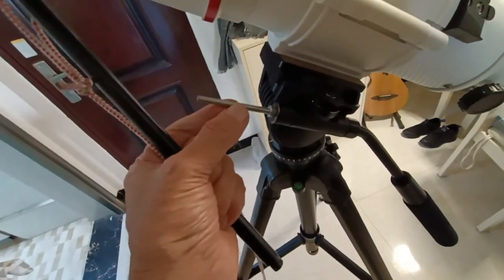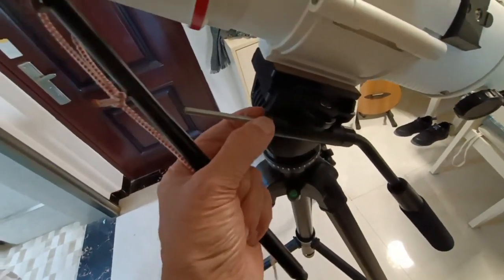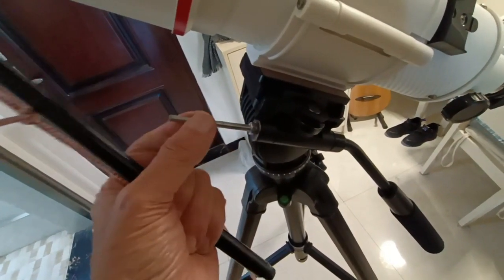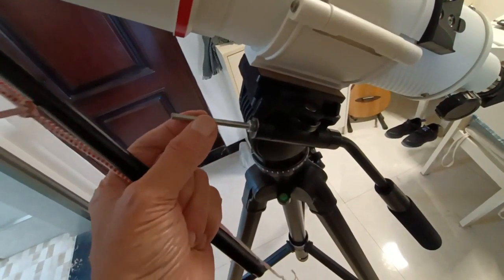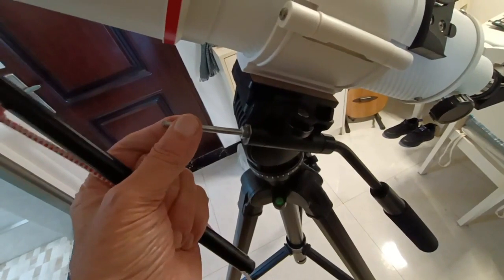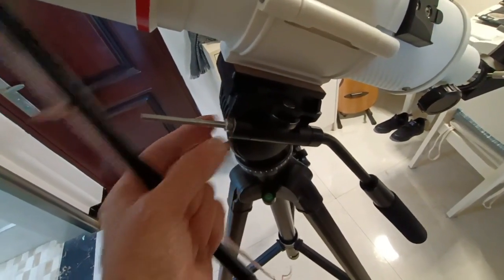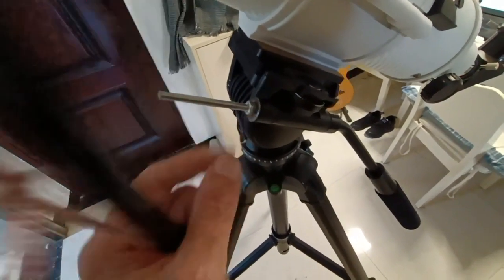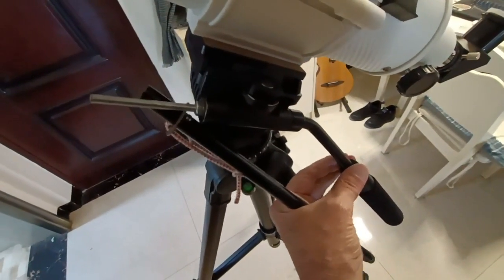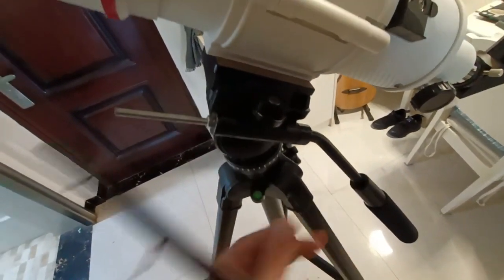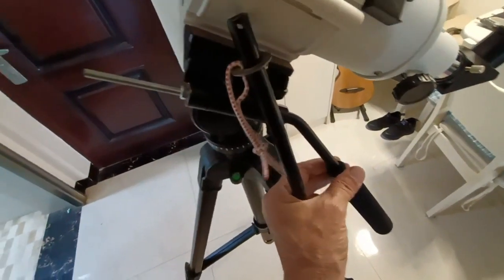I took the bolt out of here and then just replaced it with this threaded eight millimeter bolt with a lock nut on it and a washer. That locks this handle down so I can lock the handle down.